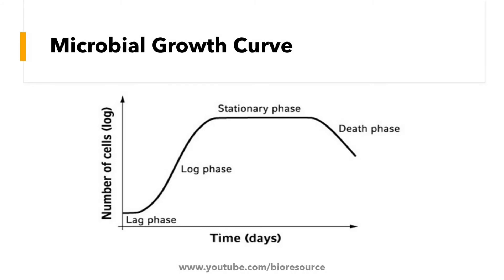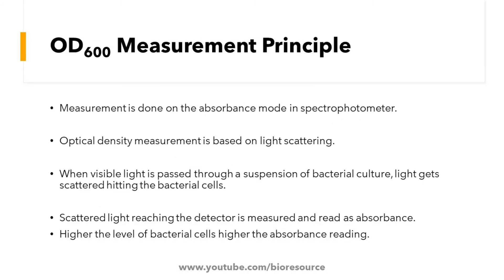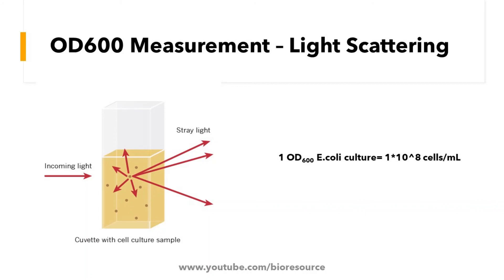The OD measurement is done on the absorbance mode in the spectrophotometer. The main principle of the optical density measurement for bacterial culture is based on the light scattering principle. When visible light is passed through a suspension of bacterial culture, the light gets scattered hitting the bacterial cells. The scattered light reaching the detector is measured and read as absorbance. Higher the level of bacterial cells, higher the absorbance reading will be.